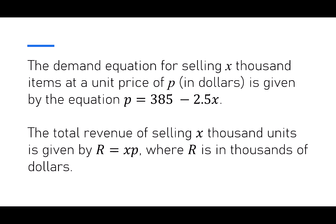The total revenue of selling x thousand units is going to be R equals x times p. So anytime we're looking for revenue, it's equal to the price times the number of items that we sell. Because we're selling x thousand items, R is going to be in thousands of dollars.